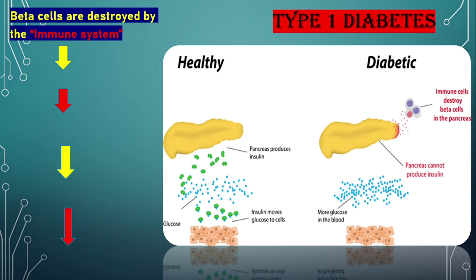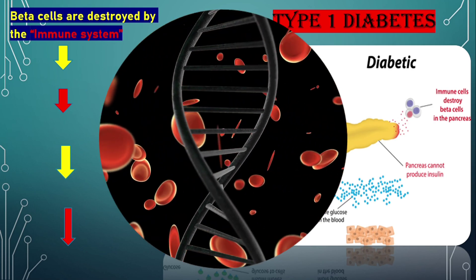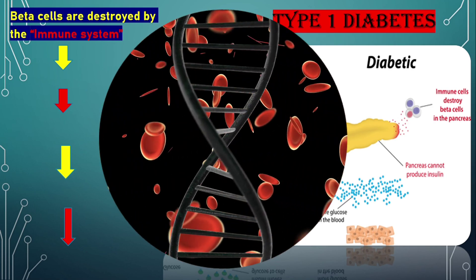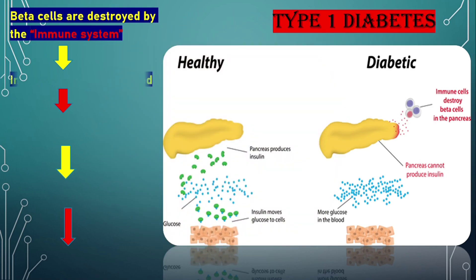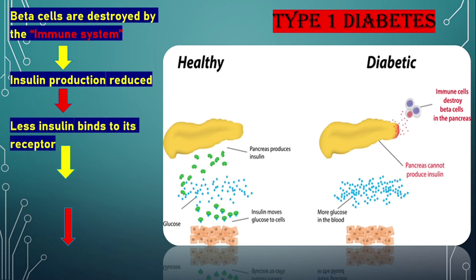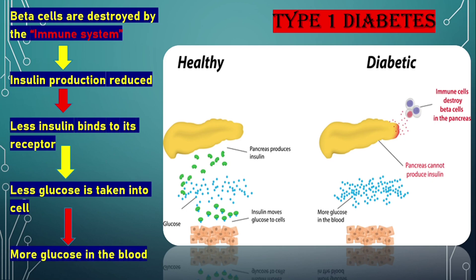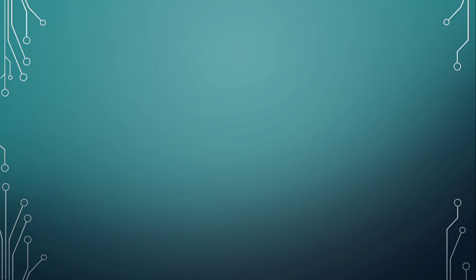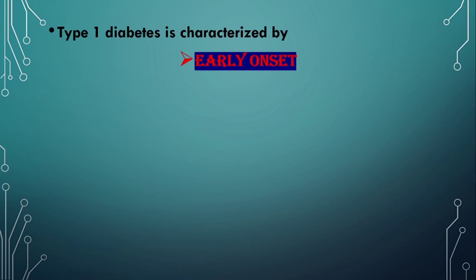The reason why this happens is unclear, but genetic factors are believed to play a major role. Insulin production is reduced, less insulin binds to its receptor on target cells, less glucose is taken into the cells, and more glucose stays in the blood, resulting in high blood sugar.